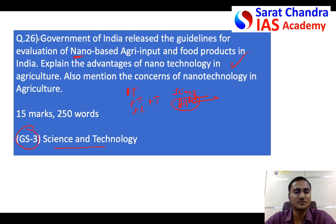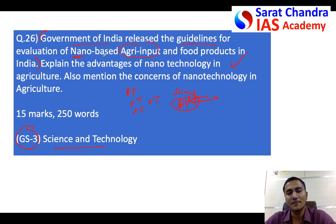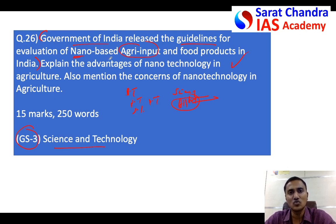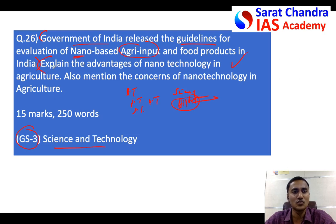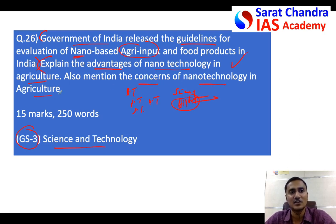Coming to this question — it has been asked specifically because recently, two months back, the government released guidelines for nano-based products in agriculture. In India, nano products are increasingly used in agriculture to increase yield or reduce pests. Based on those guidelines, this question has been framed, asking you to explain both the advantages and the concerns of nanotechnology in agriculture.